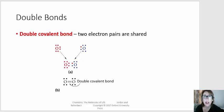We've taken a look at single covalent bonds, where two electrons are shared between atoms. Covalent bonds can also be double and triple bonds, where four and six electrons are shared respectively. So let's take a look at double bonds.